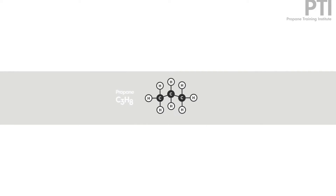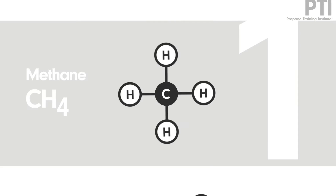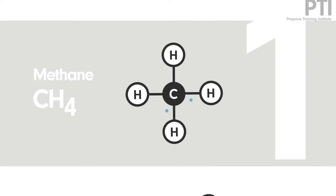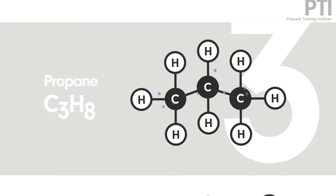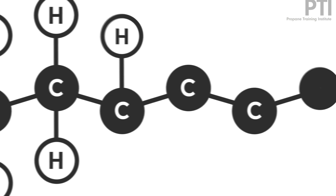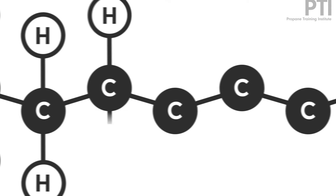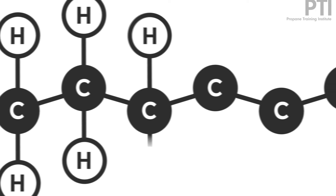Other hydrocarbons are named differently depending on the arrangement of atoms in their molecule. Methane has one carbon, ethane has two, propane three, butane four, and on and on, all based around these carbon and hydrogen bonds.